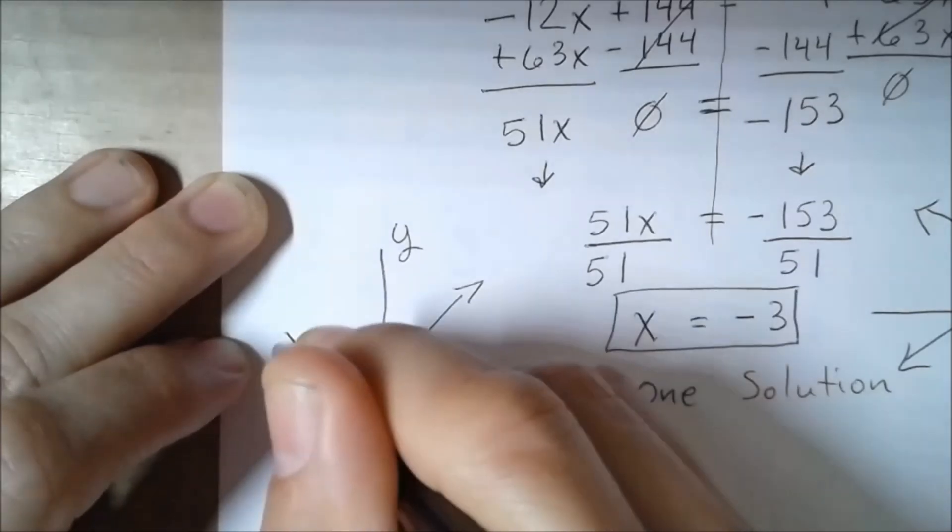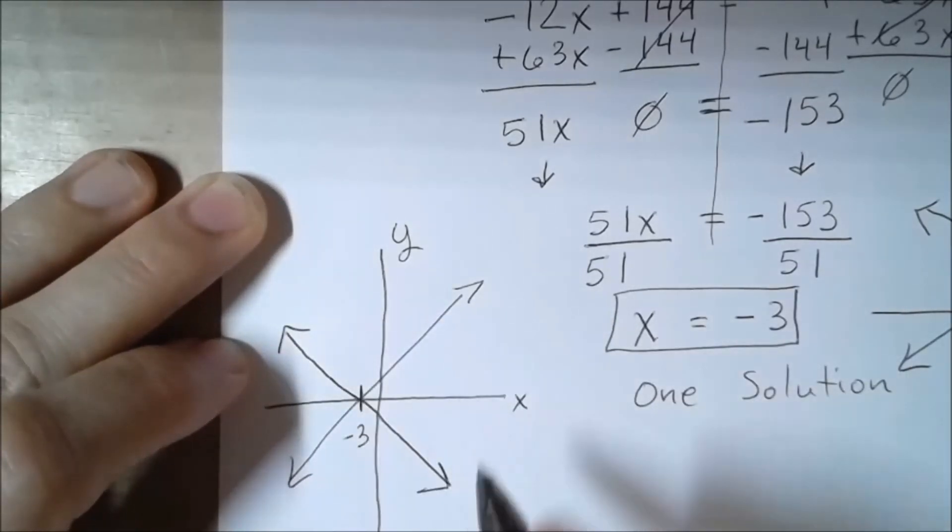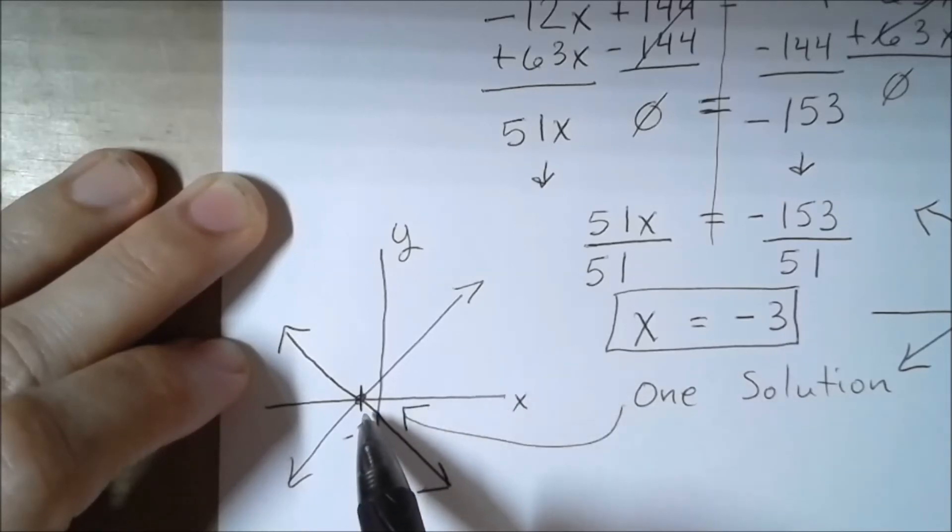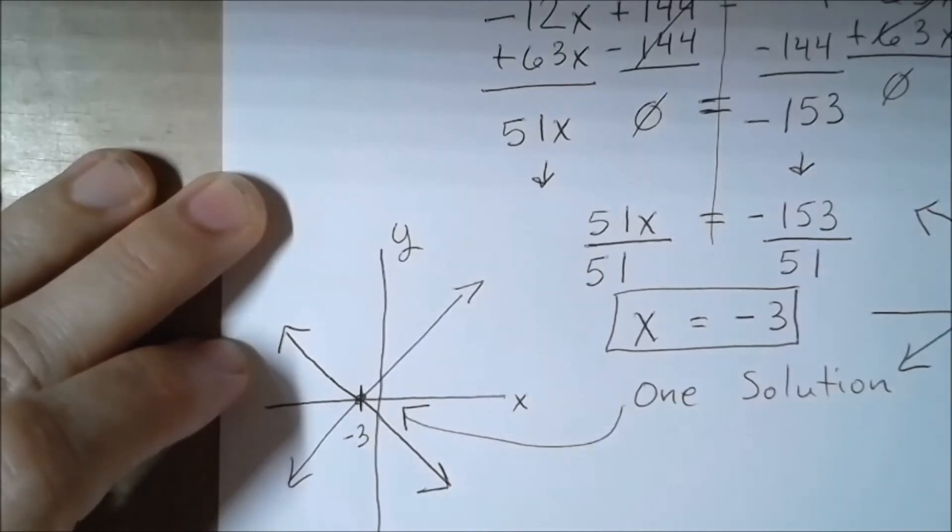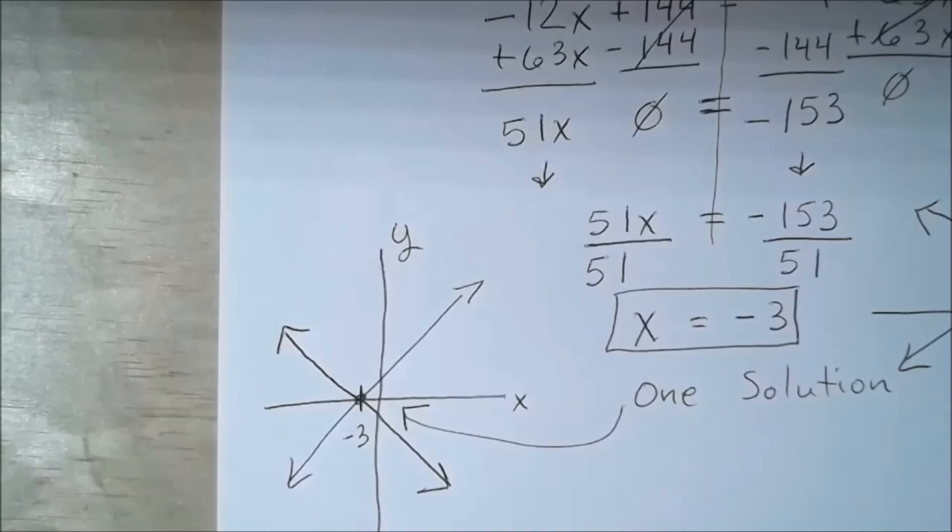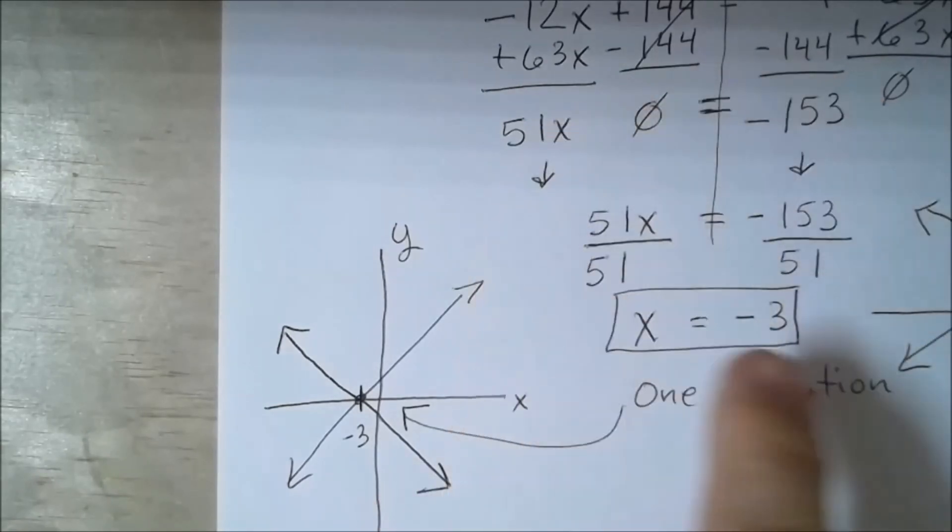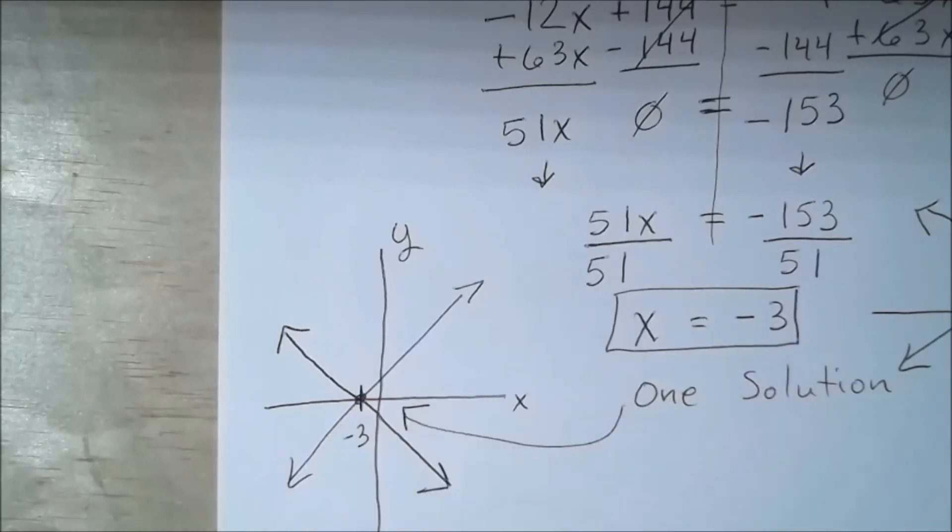And that's what one solution means. One solution just means that we have our x value in which our two graphed lines are going to cross, our what we would call our solution last year when you do eighth grade math. So keep in mind, this is visual. Even though this is an equation that we're solving for and we're getting the value, it can be represented graphically.